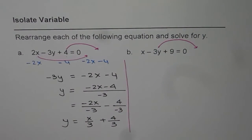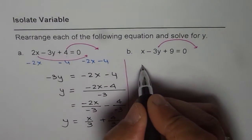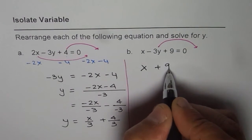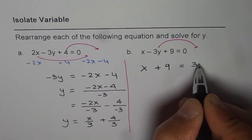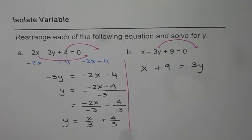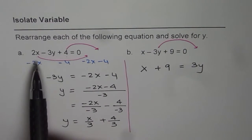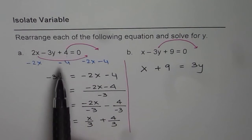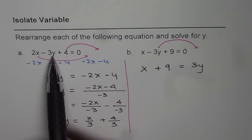If we do that, what do we get? We get x plus 9 equals to 3y. Do you see that? This is much simpler. So you are at liberty to either take all other terms, or the y term itself.